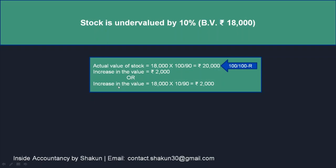We can calculate the increase in value using the formula: 18,000 × (rate / (100 − rate)). Since this 10% cannot be calculated directly on 18,000, we need to change our rate. We use rate/(100 − rate) — the reason for the minus is that in this 18,000 the increase is not included. This gives us 2,000, so the increase in the value of stock is 2,000.